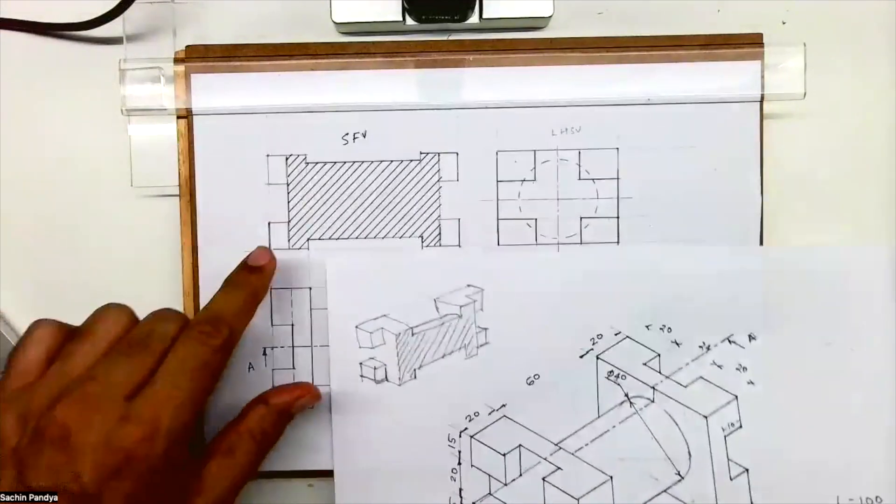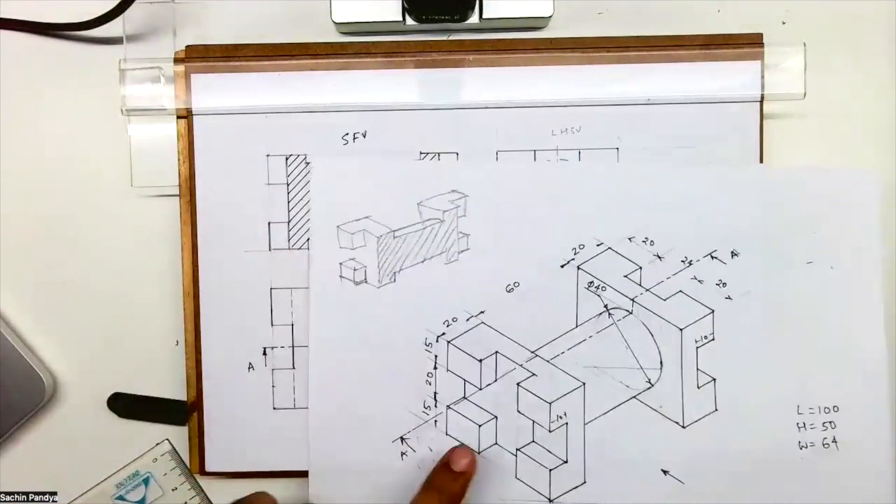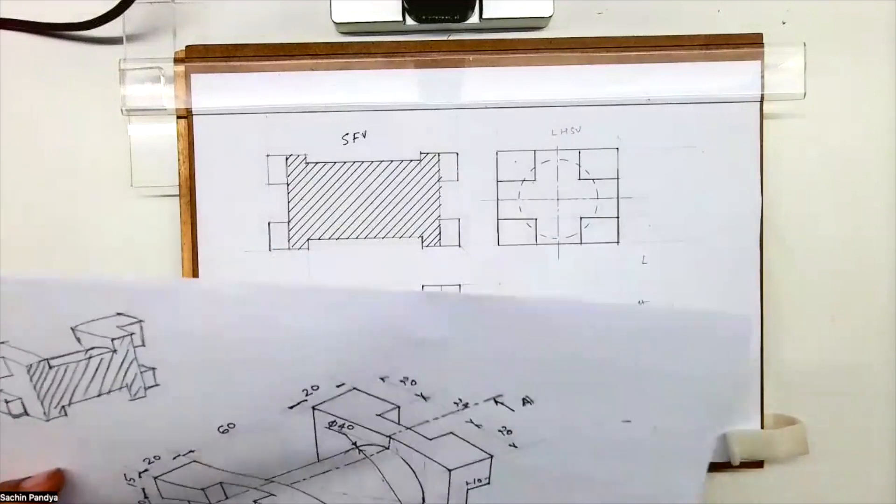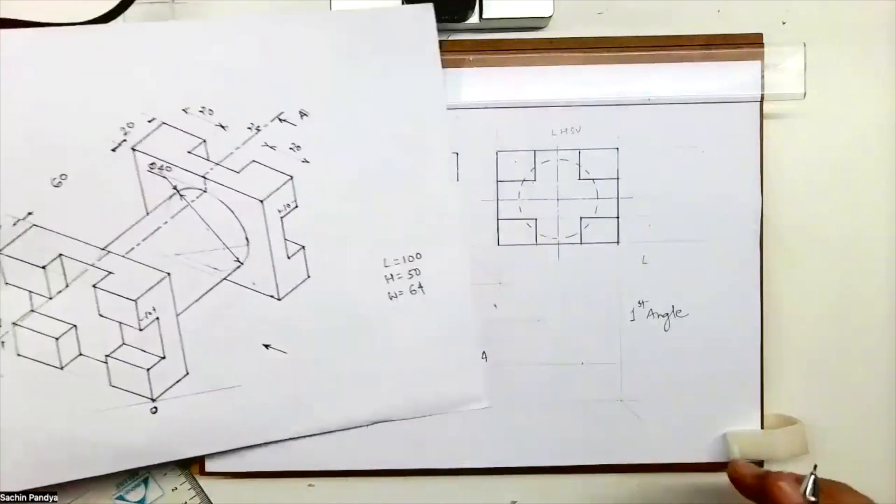See this? This is sectional front view of this sum. When you cut like this, this is how it will appear. This is top view and this is left-hand side view. So I hope this is clear.